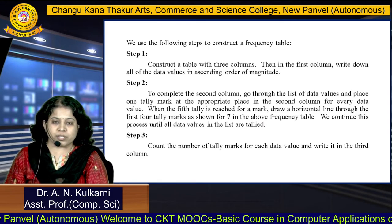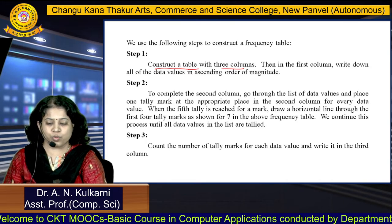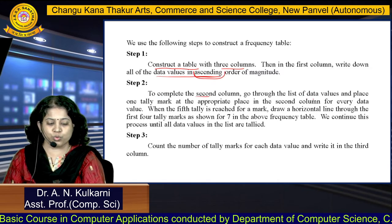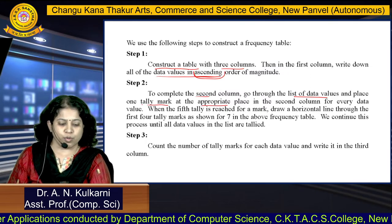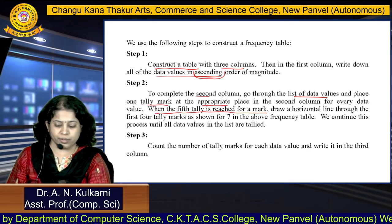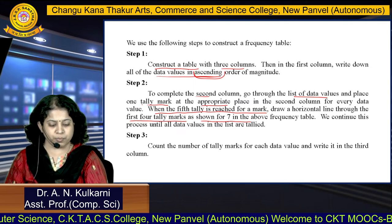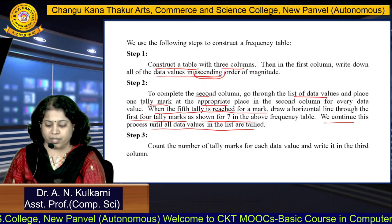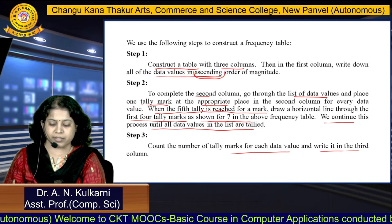Here are the tips to construct a frequency table. Step one: construct a table with three columns, and in the first column write down all data values in ascending order. Step two: go through the list of data values and place one tally mark at the appropriate place for every data value. When the fifth tally is reached, draw a horizontal line through the first four tally marks. Continue until all data values are tallied. Step three: count the tally marks for each data value and write it in the third column as frequency.